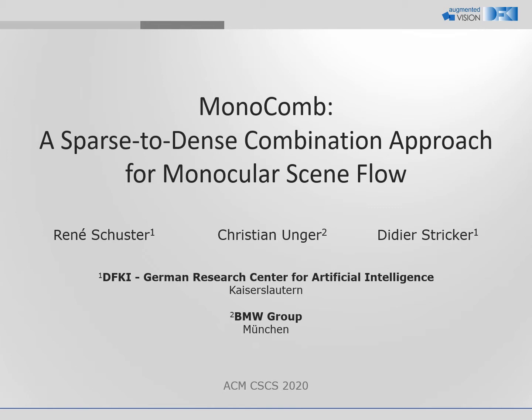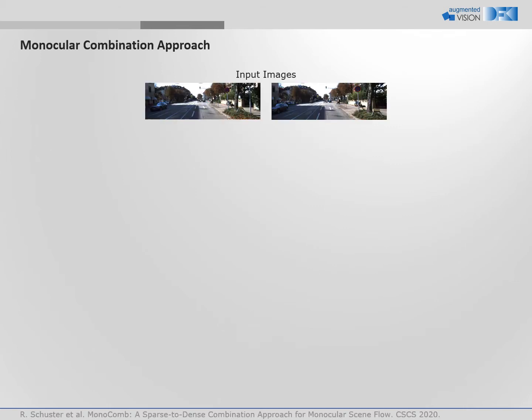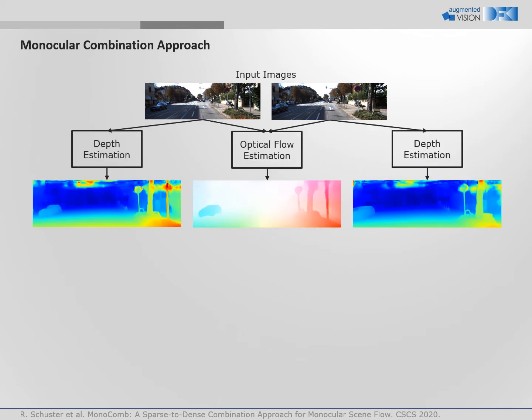The idea is to combine optical flow estimation, single image depth estimation, warping, and sparse-to-dense interpolation. The setup operates on two images obtained from the same camera with known intrinsics. We use off-the-shelf auxiliary algorithms to estimate depth for both images and optical flow from one image to the next.